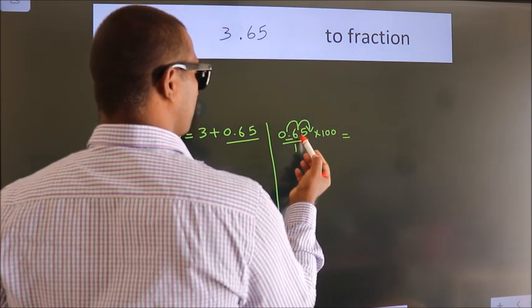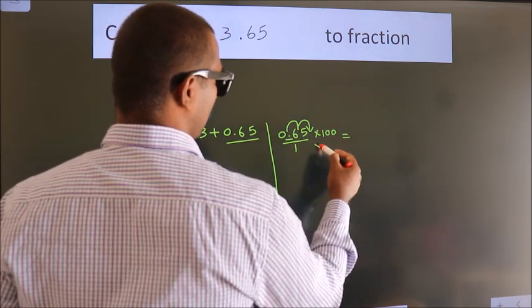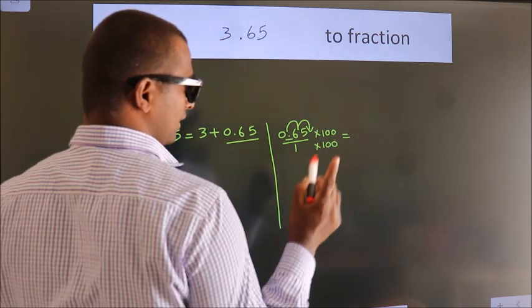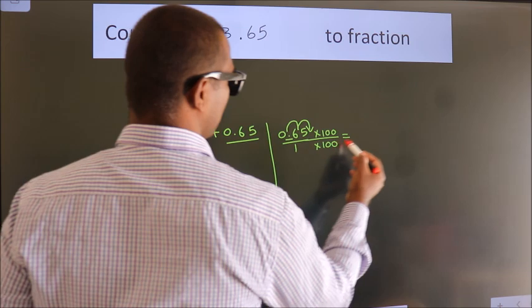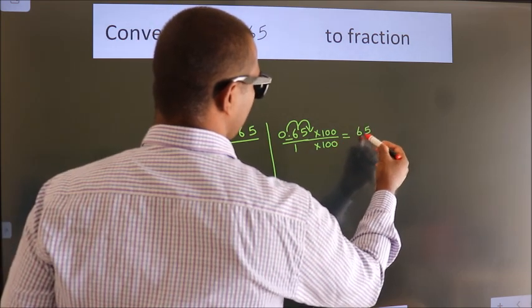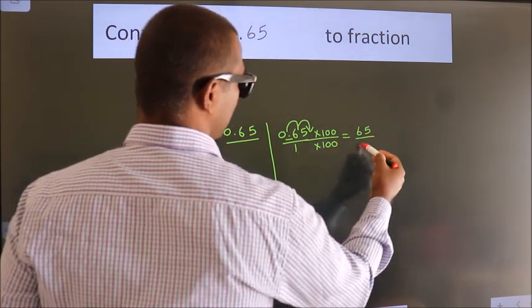Whatever you are multiplying in the numerator, in the denominator also do the same. Next, 0.65 into 100 is 65. 1 into 100 is 100.